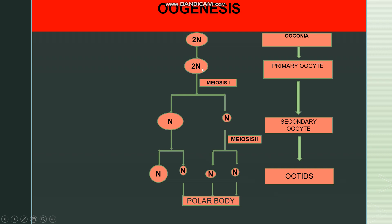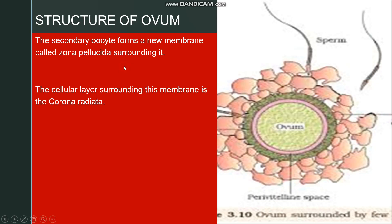In the schematic representation of oogenesis: the diploid oogonium develops into the primary oocyte after entering meiosis 1, but prophase 1 is suspended. The primary oocyte develops into the primary follicle, then the secondary follicle, then the tertiary follicle, where meiosis 1 is completed. At the end of meiosis 1, two unequal cells are produced — a larger secondary oocyte and a small polar body — with the chromosome number reduced to half. At the end of oogenesis, only 1 ovum and 3 polar bodies are produced, whereas spermatogenesis produces 4 sperms.